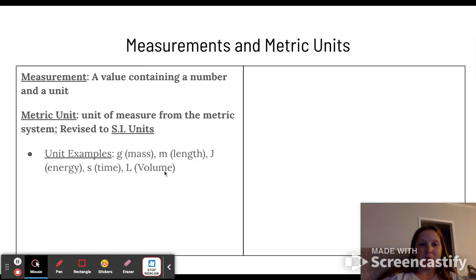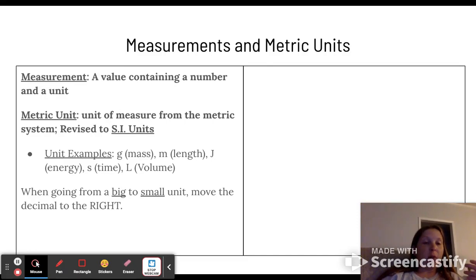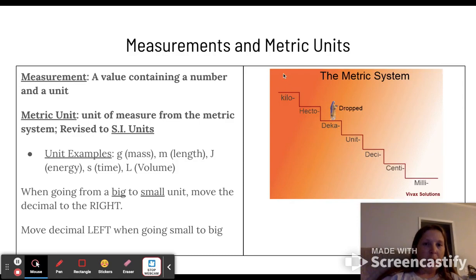When going from a big unit to a small unit, you need to move the decimal to the right. If your number does not have a decimal, then it's at the end of the value, and then you just move it however many prefixes you move on your scale. You move your decimal left when you're going from a small unit to a bigger unit. So if we're going from kilo to unit, like kilogram to gram, we would move our decimal one two three places to the right.